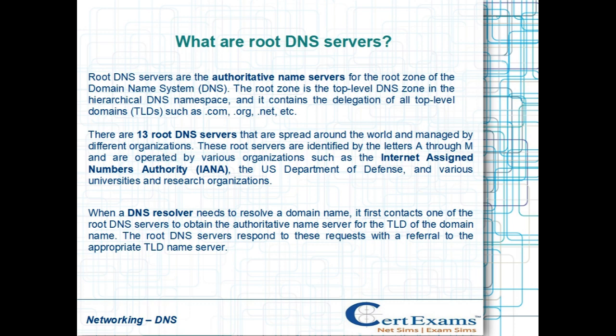There are 13 root DNS servers that are spread around the world and managed by different organizations. These root servers are identified by the letters A through M and are operated by various organizations such as the Internet Assigned Numbers Authority, IANA, the U.S. Department of Defense, and various universities and research organizations.